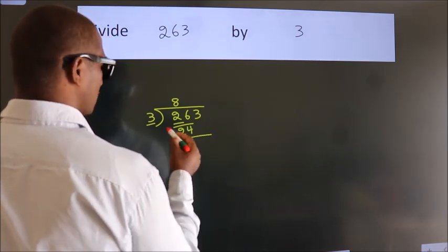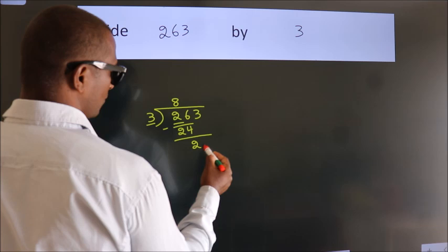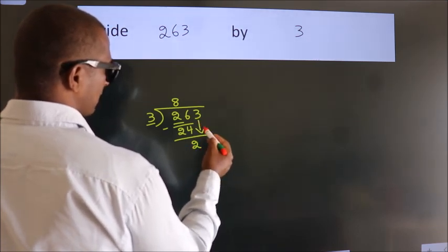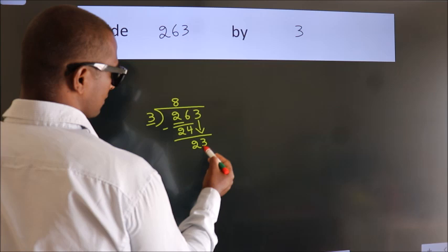Now, we should subtract. We get 2. After this, bring down the beside number. So, 3 down. So, 23.